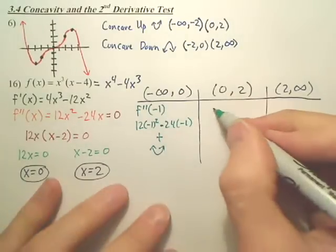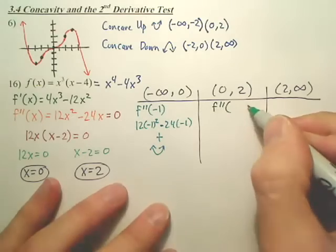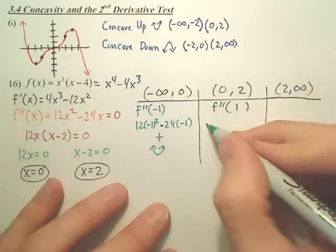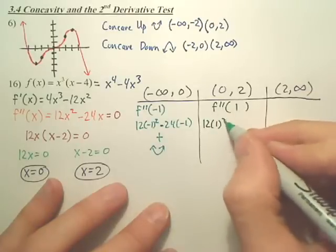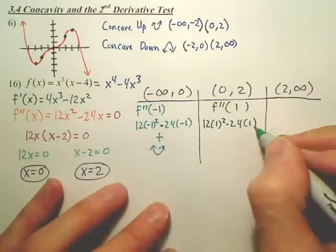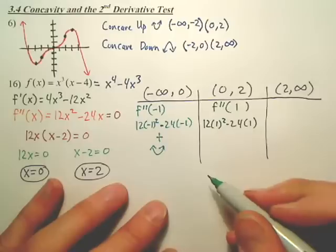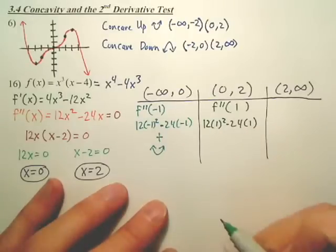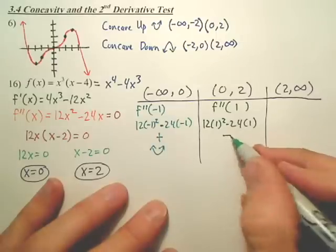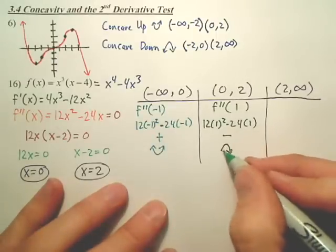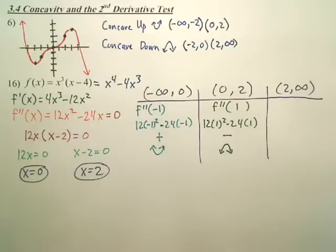Okay, next one. What's a good value to plug in? 1? We got 12 minus 24, is that negative? So what's that tell us? He's sad.